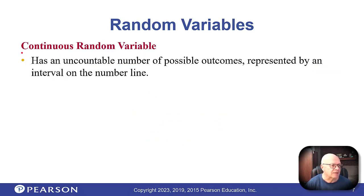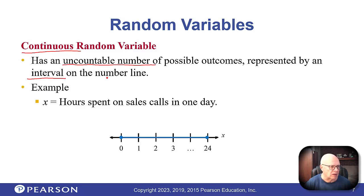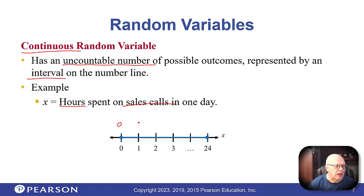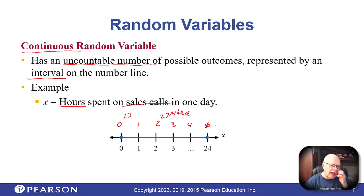How about continuous ones? A continuous random variable has an uncountable number of values, and it's represented by an interval on the number line — all those numbers in between one and two, two and three, and so on. Here's an example: the hours spent on sales calls. We can have zero, one, two, three hours, but it could be 1.3 or 2.714 hours too. Anything in between is fine, so it's a continuous random variable.